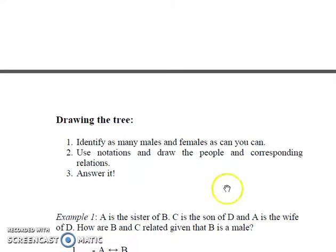Now comes the question of drawing the family relationship tree. First, read the question carefully and then try to identify the males and the females. Then use the above given notations here, or if you prefer your own notation then use them to draw the people and corresponding relationships and then answer the question.